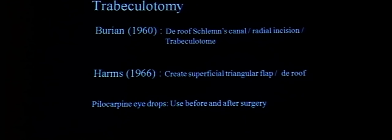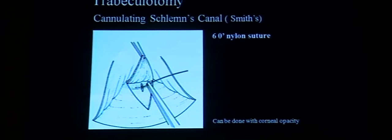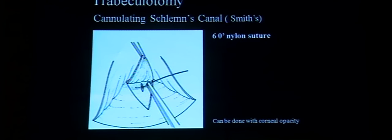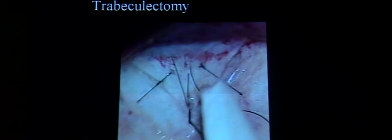Trabeculotomy was first described by Burian, who de-roofed Schlemm's canal through a radial incision using a trabecular tome. Harms added to this by creating a superficial triangular flap. The use of pilocarpine before and after helped increase success. Sutures have also been tried to de-roof Schlemm's canal. The advantage of trabeculotomy ab externo is that it can be done even in the presence of corneal opacity.